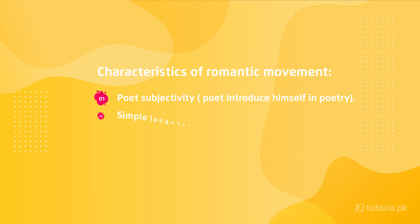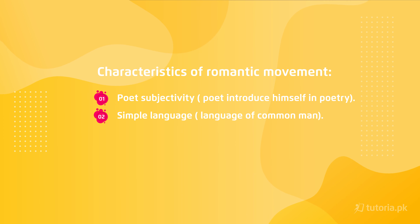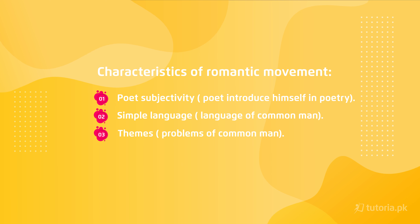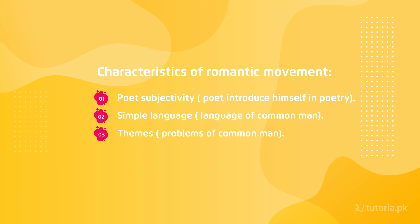Secondly, compared to neo-classical poetry, the language used in Romantic movement poetry was very simple — it was a language a common man could understand. Thirdly, when we talk about subject matter, then the subject matter was about common people. The emphasis was on the struggles and experiences that ordinary people were facing.